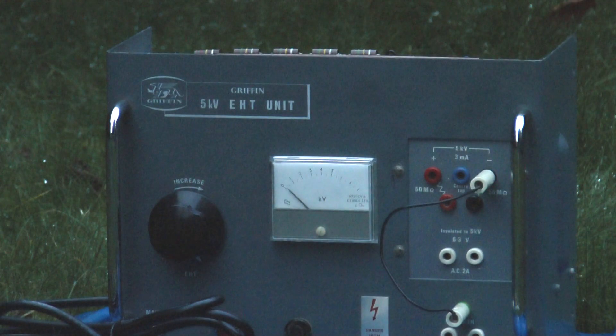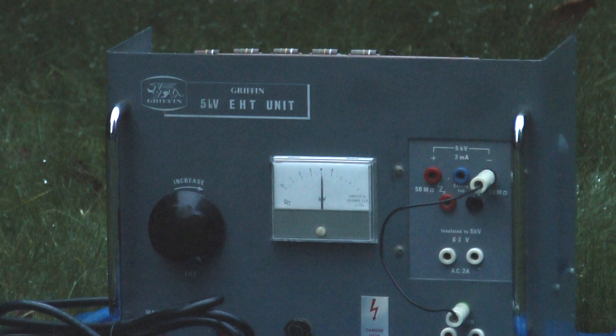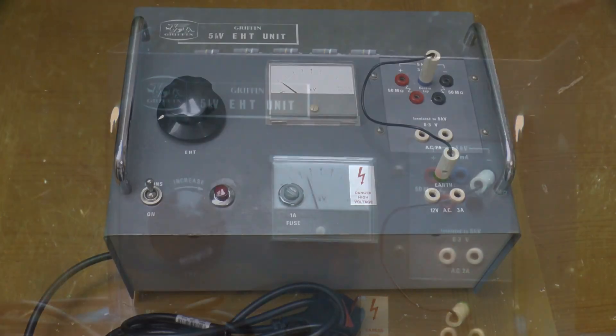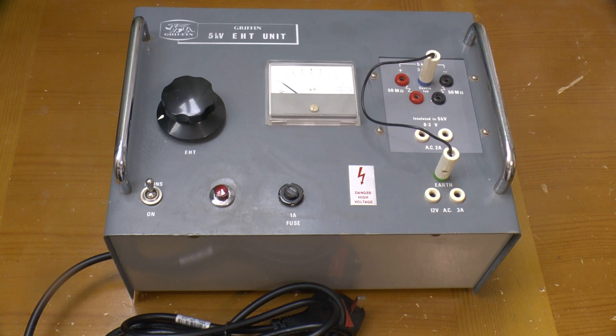Out with that ground reference on one side though. So there you go. A 50 year old Griffin 5000 volt power supply and as far as I can tell it's working fine. Thanks for watching.